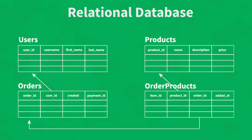We need a users table, a products table, and an orders table, and we also need to store whether a payment has been made for a product or not. This is an example of what your tables will look like, and from the sentence we can already see the relations: users are the ones who make orders, so every order has to belong to a user.